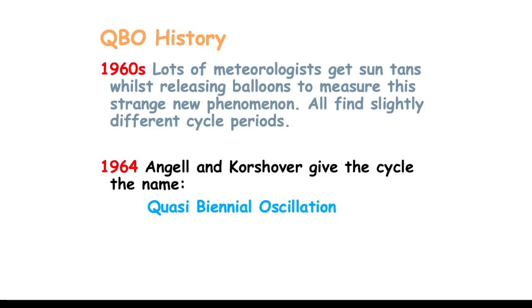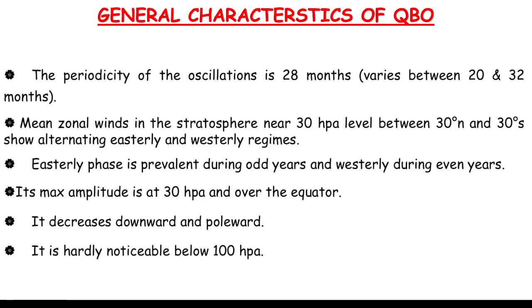From the general characteristics of Quasi-Biennial Oscillation: the mean periodicity is 28 months but it varies between 20 to 32 months. The maximum amplitude of the zonal wind is at the 30 hectopascal level, which is in the zone of 30°N to 30°S above the equator. As you move towards the poles the intensity decreases, and as you move towards the tropopause it dissipates.